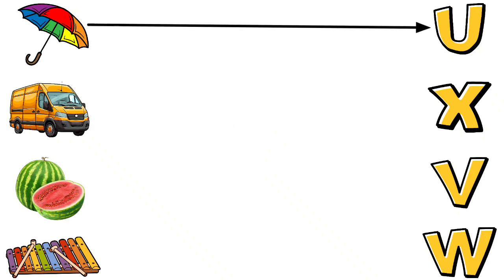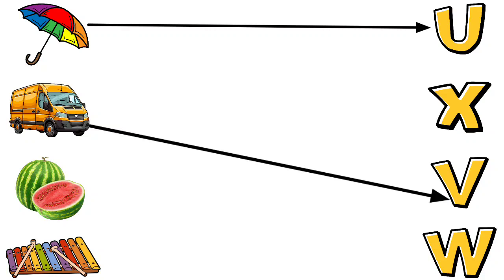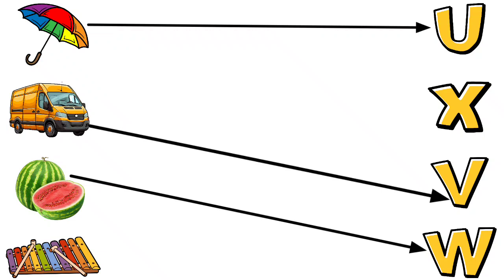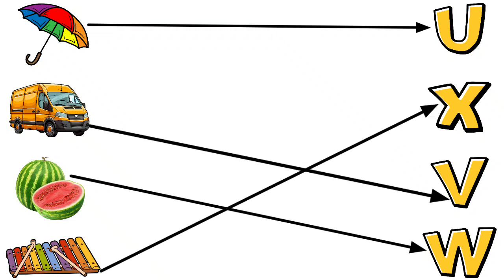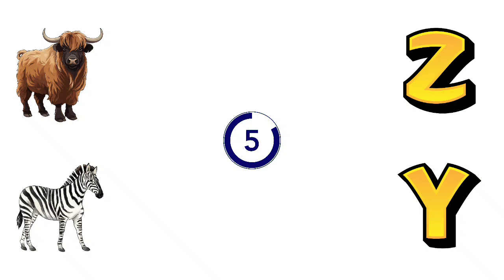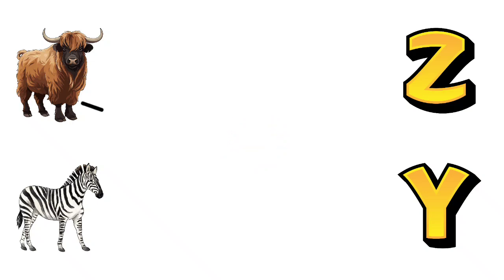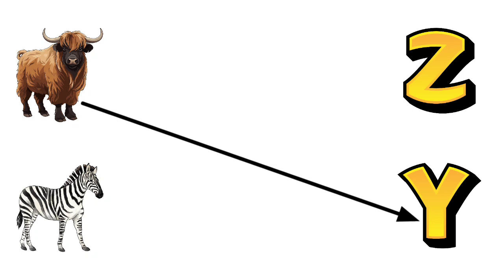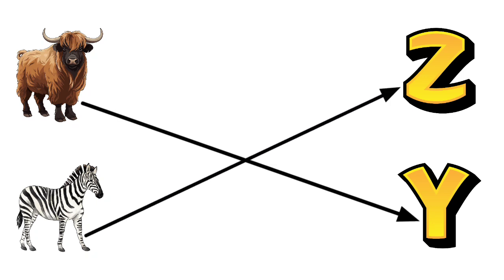U for Umbrella, V for Van, W for Watermelon, X for Xylophone, Y for Yak, Z for Zebra.